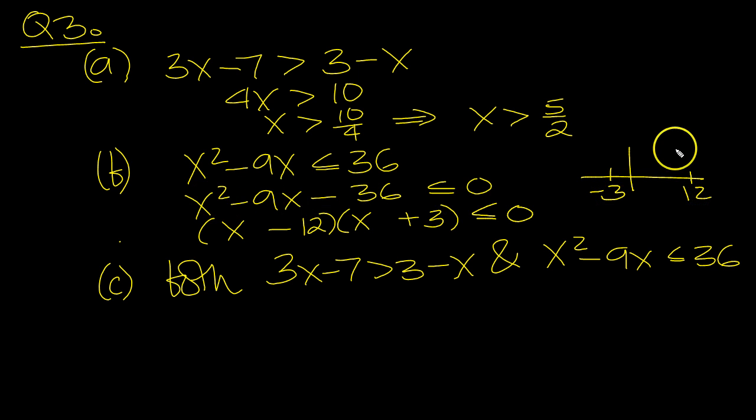It's a positive quadratic, so it comes down like this. So when is this less than or equal to 0? It's less than or equal to 0 when x is less than or equal to 12 and greater than or equal to minus 3.